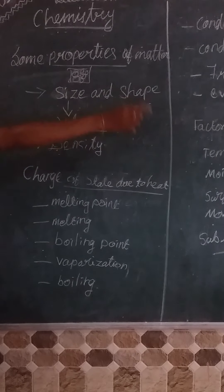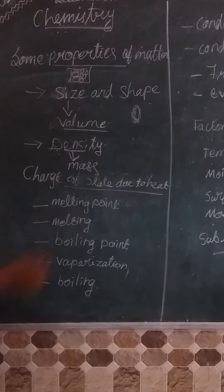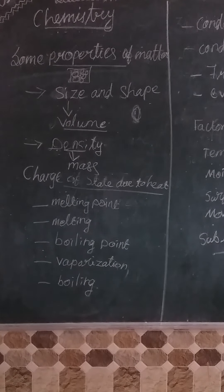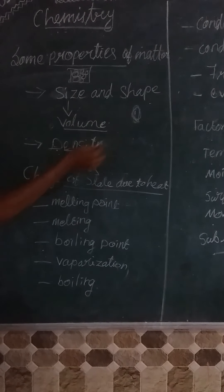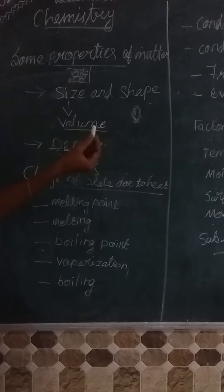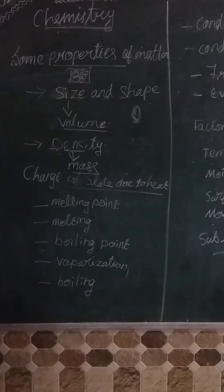Then shape — we know the shape of the matter. Then density. Density is nothing but the mass. What is mass? Quantity of matter. So you know volume is the space of matter. Density or mass is the quantity of matter — that means the number of particles present in the matter. That is the density.